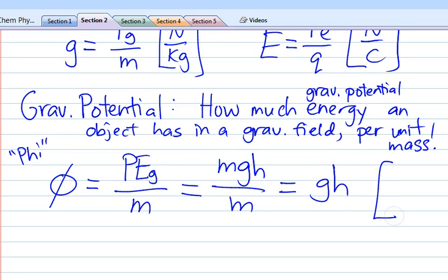And so what we can do is write gravitational potential energy as MGH. And when we divide it by M, we get something which looks like GH. It has units of energy, joules, per mass, kilogram.